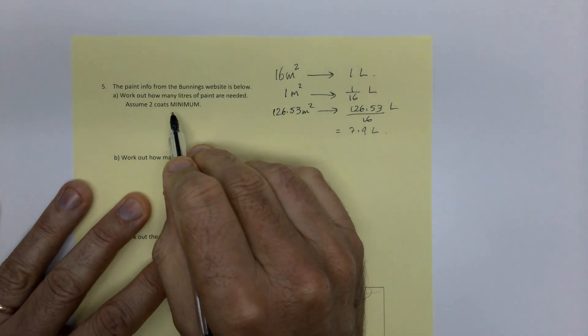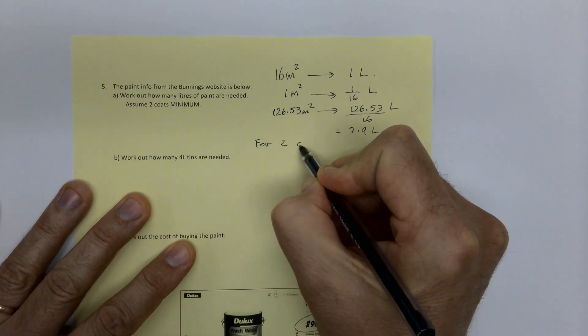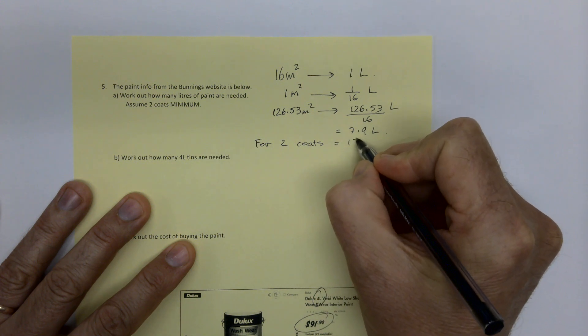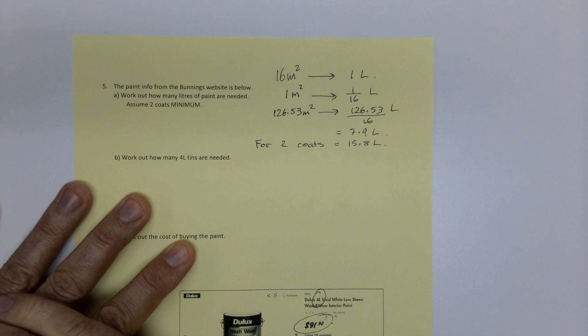But we want two coats minimum. So for two coats, I double that and that is 15.8 liters.